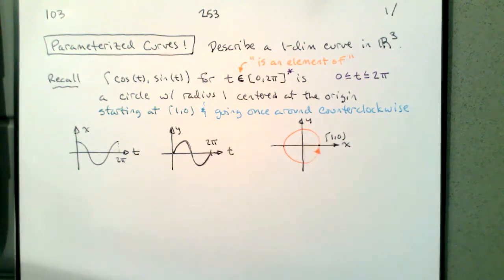The combination of those two motions — the horizontal and the vertical — give us not only this circle, but this circle starting off at (1, 0) and going once around counterclockwise. So if we understand how this motion works, we can start making adjustments and find different circles.